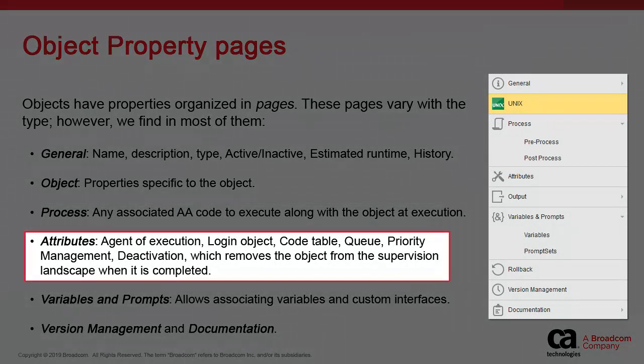The attributes will vary with the type. In a Jobs object, attributes are very important. Here you indicate the agent where the job is to execute, as well as the login object — in other words, the system account with the appropriate privileges to execute on the system. You'll find other items like queue priority management tools, variables, and the behavior driving deactivation, whereby execution instances of the object are no longer visible in AA's monitoring interface.